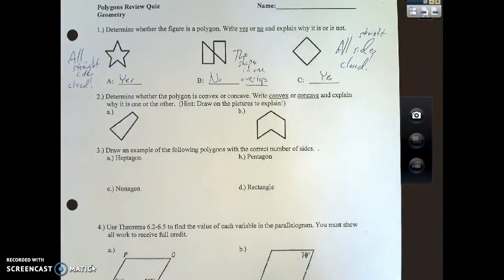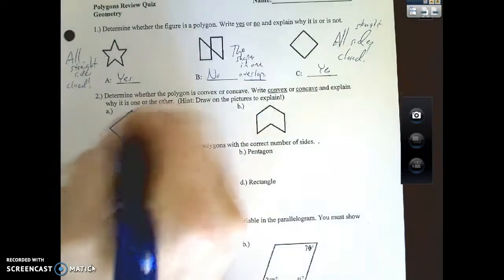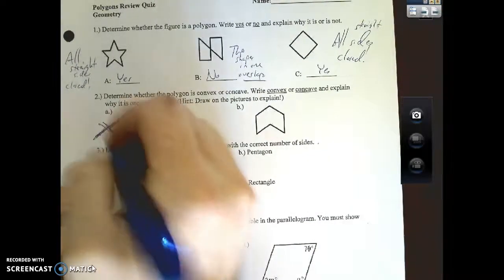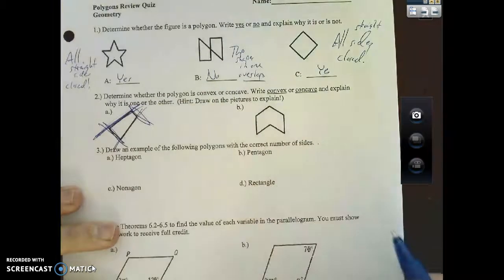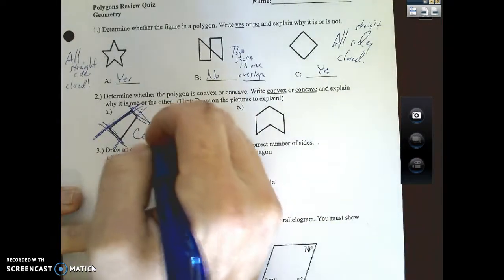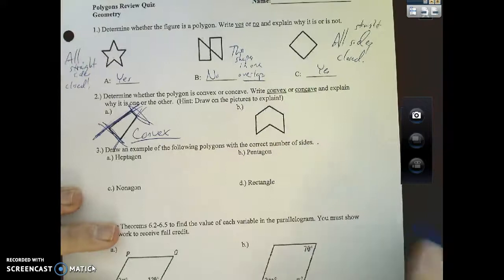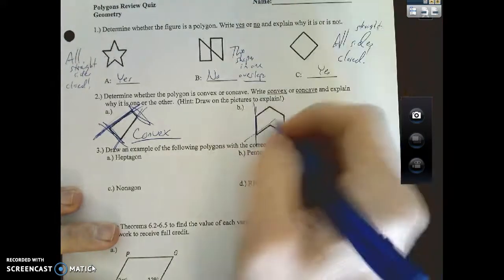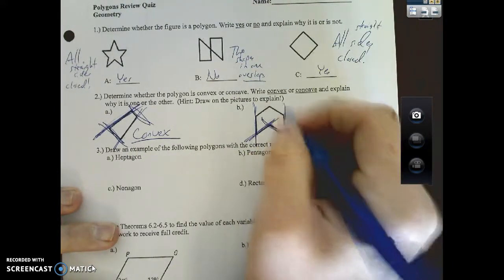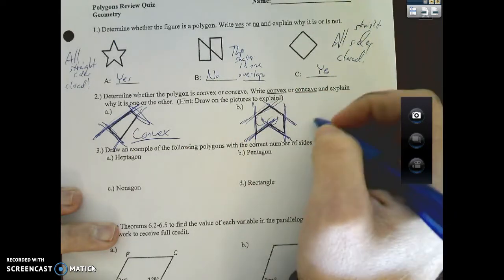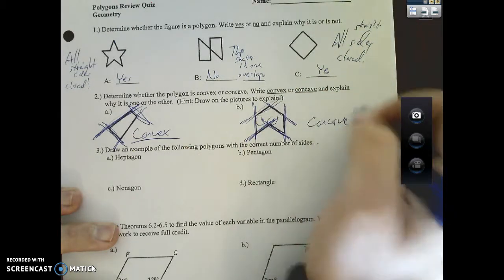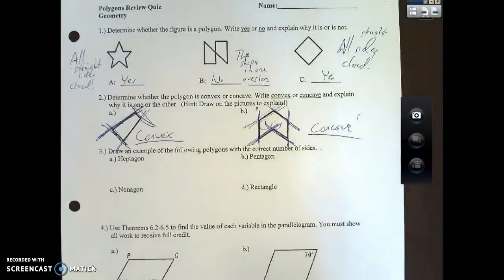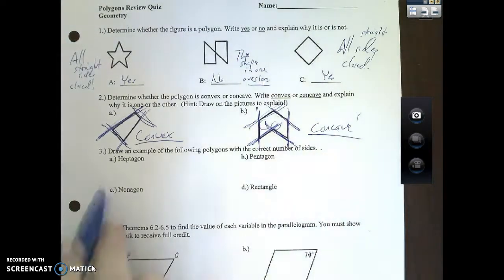Determine whether the polygon is convex or concave. Write it and then explain why it is one or the other. Hint: draw a picture to explain. Your explanation is just this—extend your lines out, do any go in? No, this is convex. Meanwhile over here if I extend my lines out, see how right here and here it's going inward? That's concave.